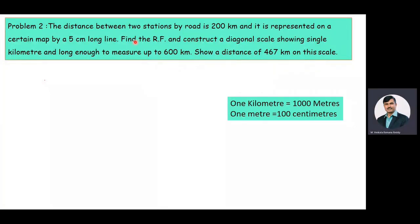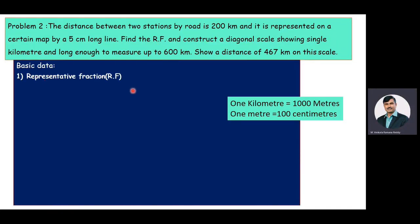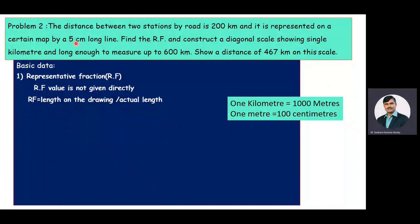As a first step, we need to know the representative fraction value. In the problem, the distance between two stations by road is 200 kilometers, represented on the map by a five centimeter long line. The RF value is not given directly — we need to calculate it. The representative fraction is equal to length on the drawing divided by actual length.